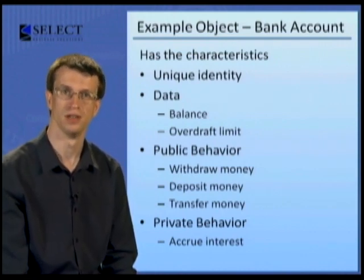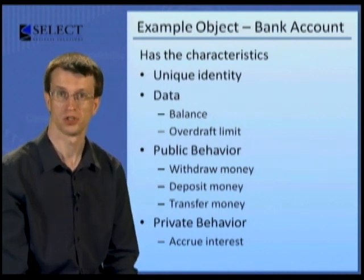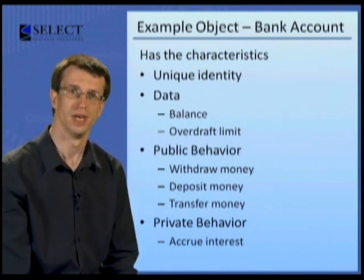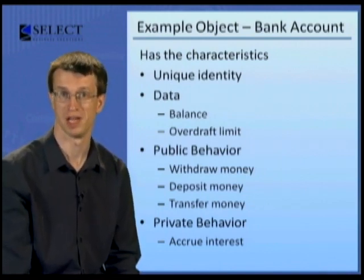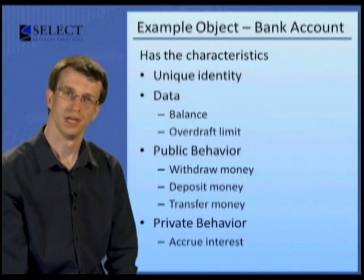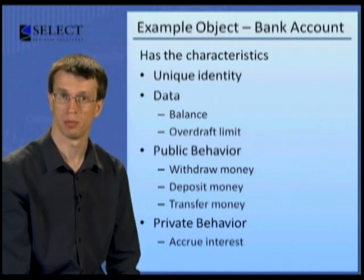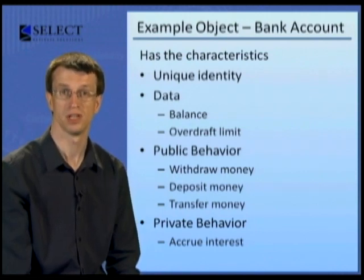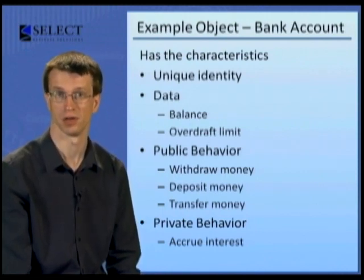It has behaviour: to withdraw money, deposit money, transfer money, accrue interest. It has an interface — this is the public behaviour accessible by other objects. In this example, all the behaviours listed would be public except accrue interest, which you can think of as an internal or private behaviour of the object.